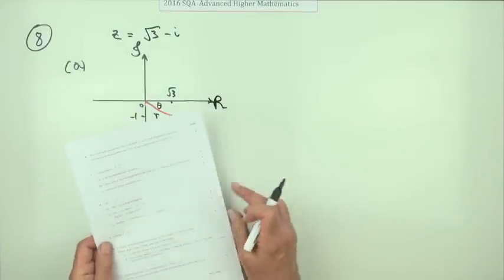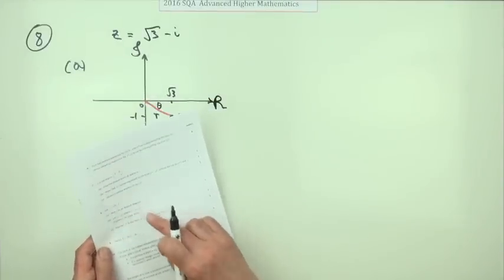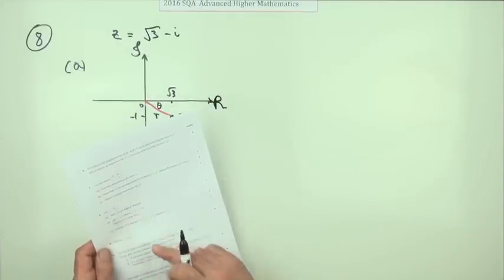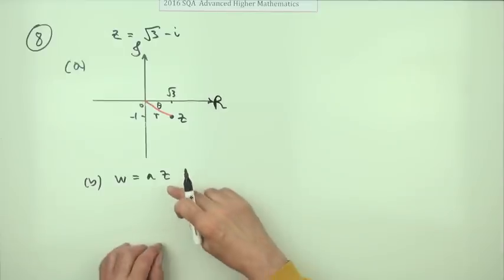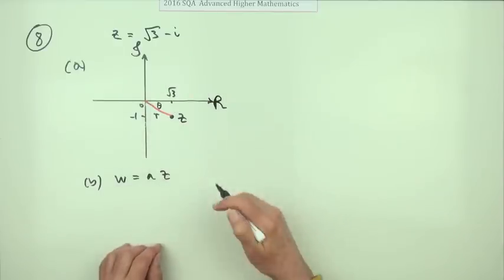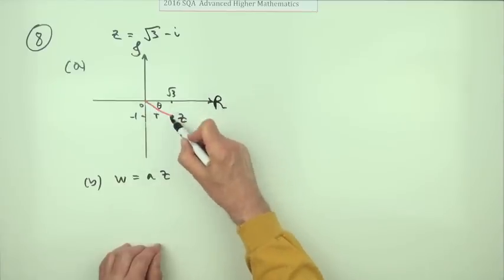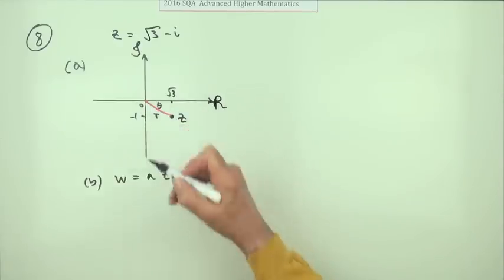Part B. Let w equal a z where a is just a real number. Express w in polar form. We can get the polar form of z straight off that diagram. As I said before, that's two and that's 30 degrees, but it's a negative 30 degrees.